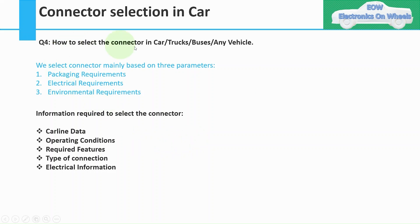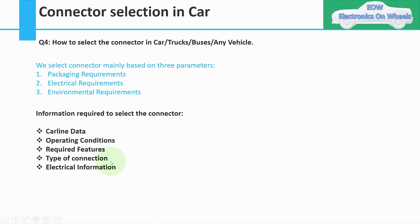There are three parameters based on which we select the connector: first is the packaging requirement, second is the electrical requirement, and third is the environmental requirement. Before selecting a connector, we also need to collect certain information: car line data, operating conditions, required features, type of connection, and electrical information.